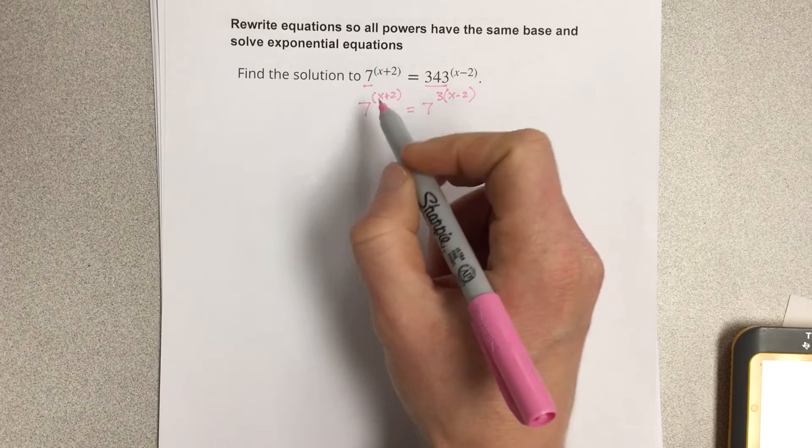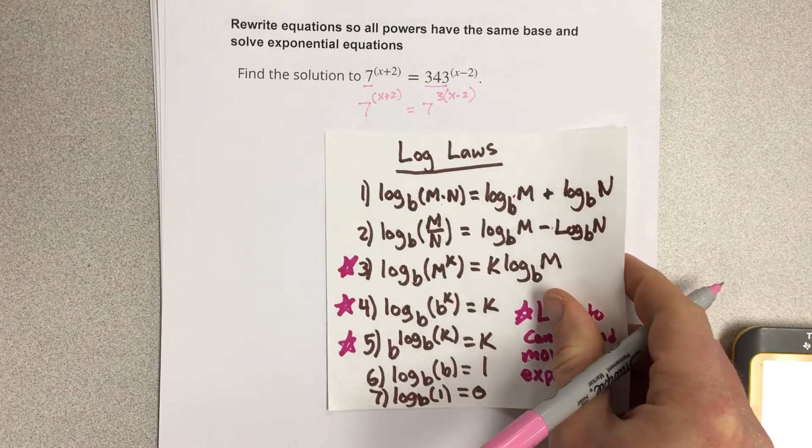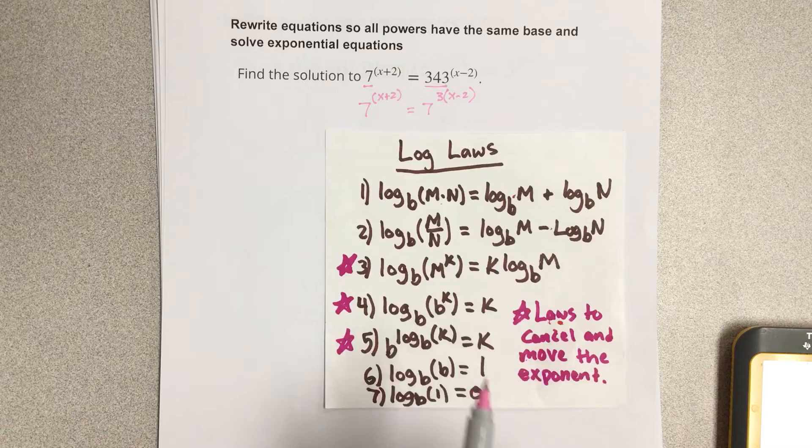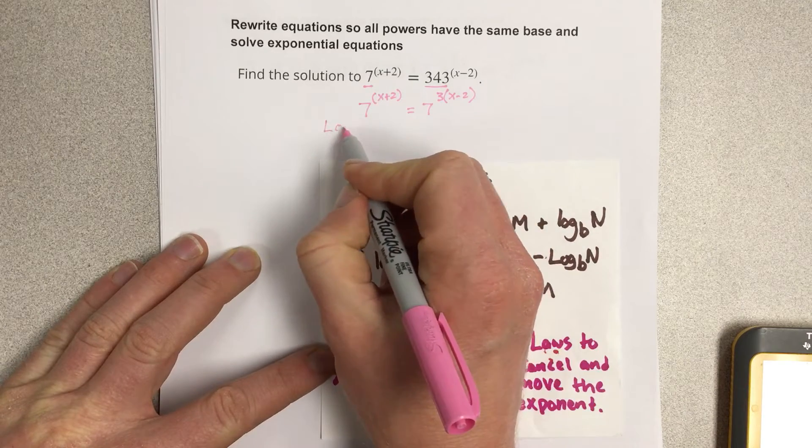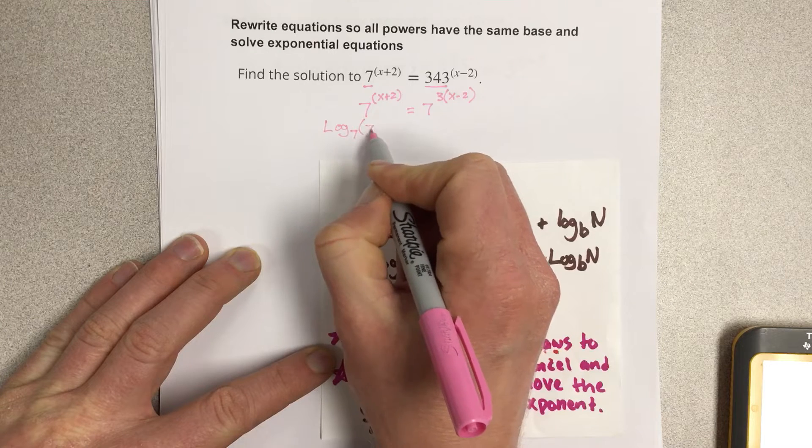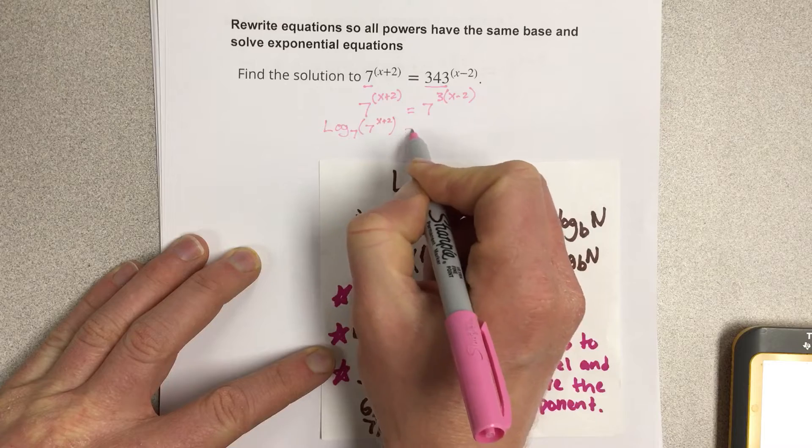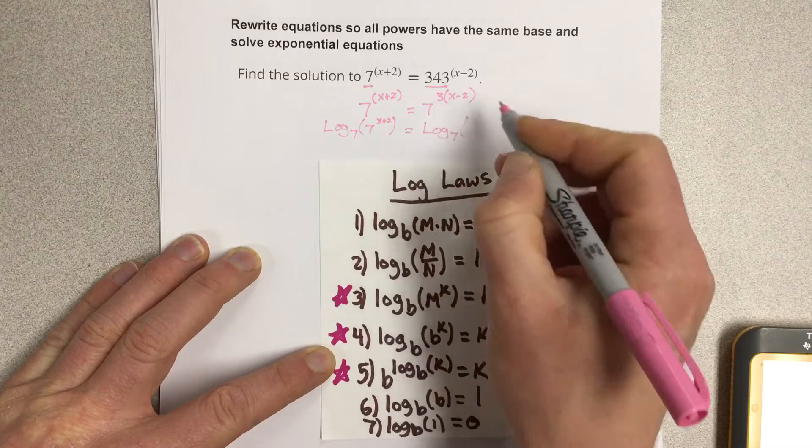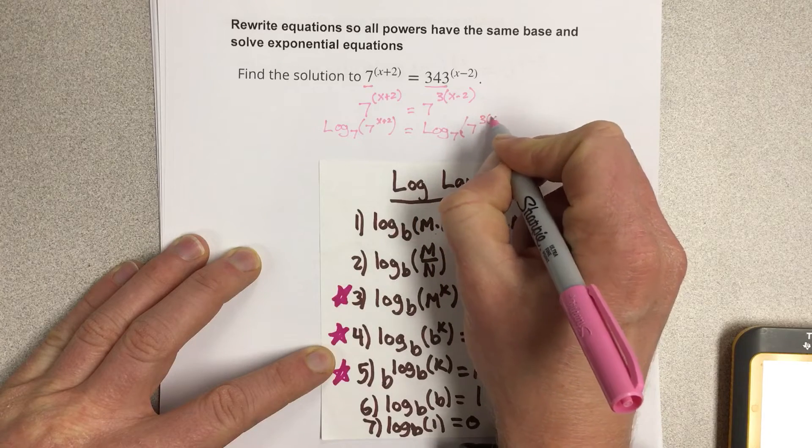So then I could actually just say that I'm going to use this log law: log base b of b^k equals k. And I can write that as log base 7 of 7^(x+2) equals log base 7 of 7^(3x-2).